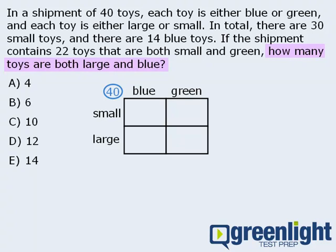The question asks us to find the number of toys that are both large and blue. So we want to determine how many of the 40 toys are in this box. So let's add a star here to remind us that this is our target box. Okay, now that we're all set up, we're going to take the given information and add it to our diagram.